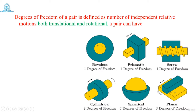The planar pair — which we have not discussed before — consists of two planes in contact with each other. One body can slide along the x-axis, slide along the y-axis, and also rotate about the third axis perpendicular to the plane. So it has a maximum of three degrees of freedom: two translations along x and y axes, and one rotation about the third axis.